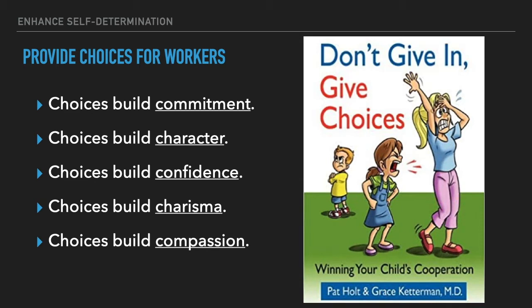I saw this book and thought it was very helpful when talking about providing choices for workers. It's entitled 'Don't Give In, Give Choices' — about winning your child's cooperation. If you've worked with children, you know that just telling them to do something doesn't always work. You have to give choices. This empowers the child to own a decision. This not only works for children but also in corporations, businesses, and churches alike. When we give people the opportunity to choose, they will embrace it and go forth and accomplish great things.